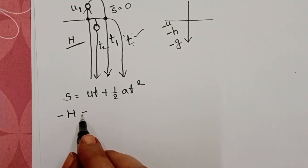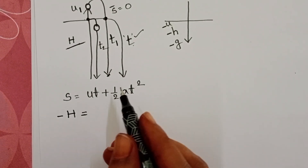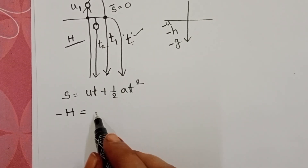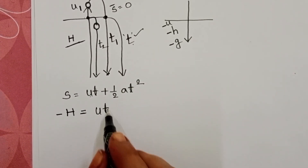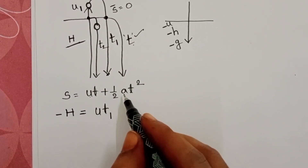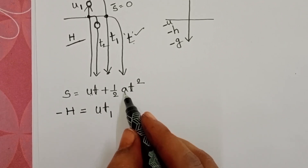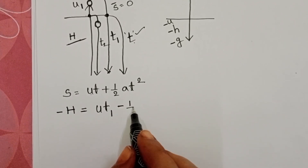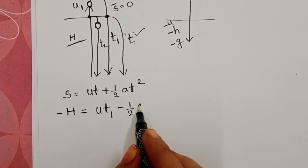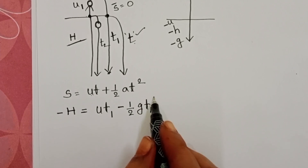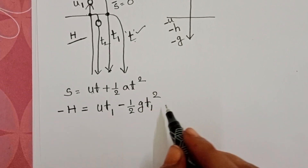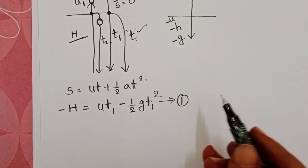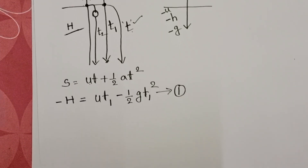This body is projected in the upward direction, so U is positive. Time is T1, but gravity is always acting in the downward direction, so acceleration is negative. The equation becomes: −H = UT1 − ½GT1². This is equation 1 for the first body projected in the upward direction.